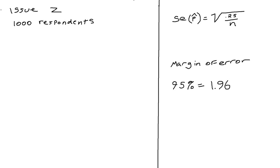Have you ever seen those presidential or election things where they say so-and-so is winning 48% to 42% plus or minus 3%? That's really what we're talking about right here today. So let's say that we have Issue Z and we're looking at 1,000 respondents. We want to figure out what our maximum standard error is and we want to figure out our confidence interval.